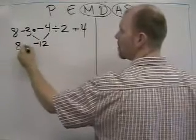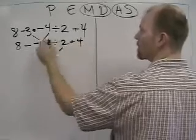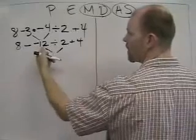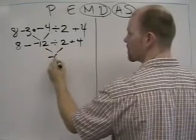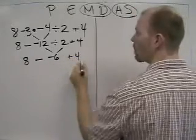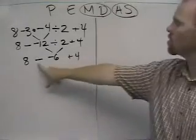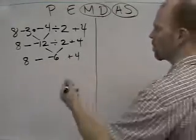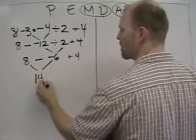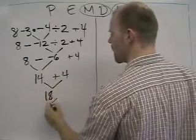So now we have 8 minus negative 12 divided by 2 plus 4. Now we divide because there are no parentheses, no exponents, and no multiplication. Negative 12 divided by 2 is negative 6. So now we have 8 minus negative 6 plus 4. Since subtraction is on the left of this problem, we're actually going to subtract first. 8 minus negative 6 is positive 14, plus 4, and the final answer is 18.